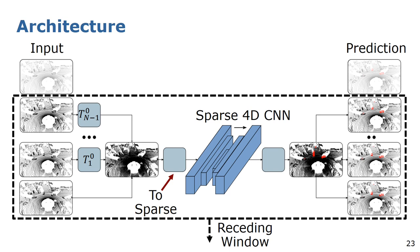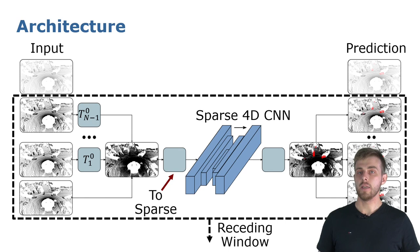The dash window is the receding horizon of the n scans we currently process. In the next timestamp, it is shifted by 1 along the temporal axis, resulting in our receding horizon strategy.